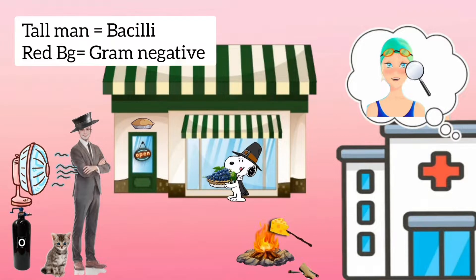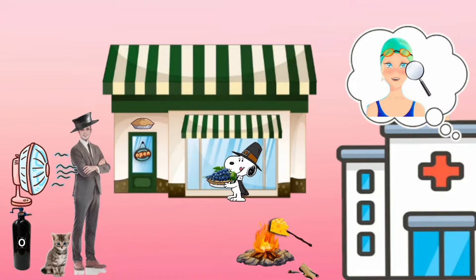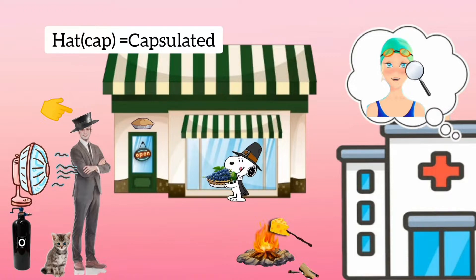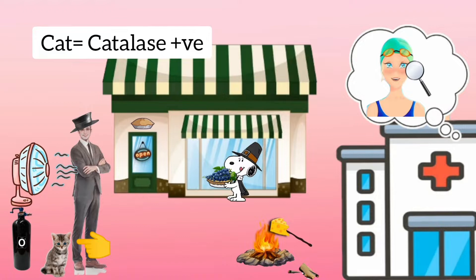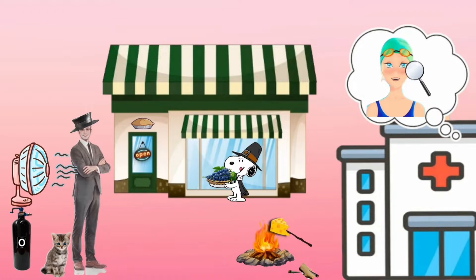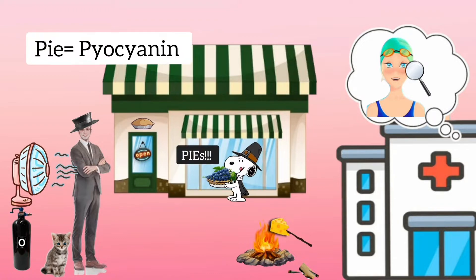He is a tall man, telling you that it is a bacilli. The reddish background represents gram negativity, so it is a gram-negative bacilli. Like old British style, he is wearing a hat, which tells us it is a capsular organism. He has brought along a pet cat, telling us it is a catalase positive organism.